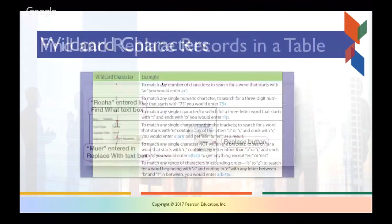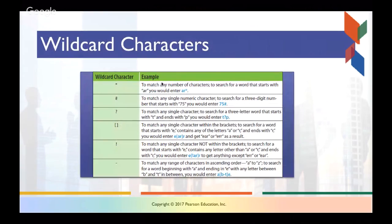We'll skip over the find and replace stuff here, but we will talk a little bit about this notion of wildcard characters that you have in Access. The goal of this is to be able to match things rather imprecisely. In the case of using an asterisk as a wildcard character, it's to match any number of characters to search for a word that starts with something. For example, if I want to search for words that begin with AR, I could put AR and then an asterisk in my filter criteria.